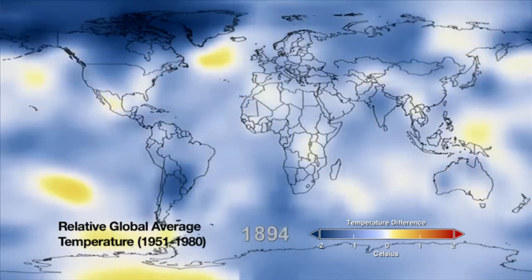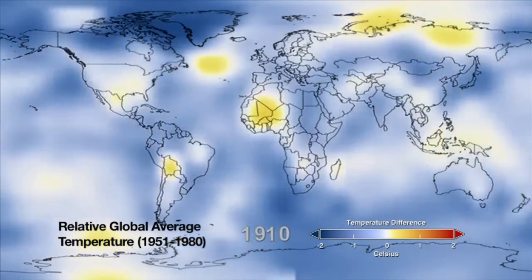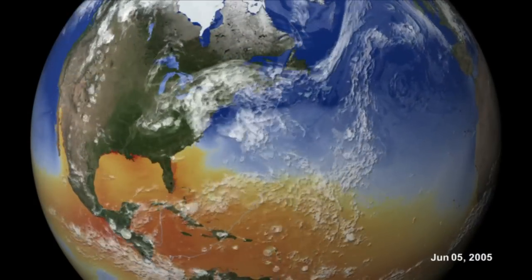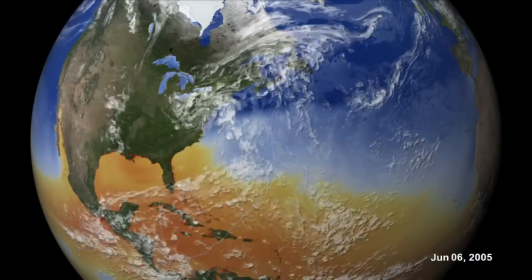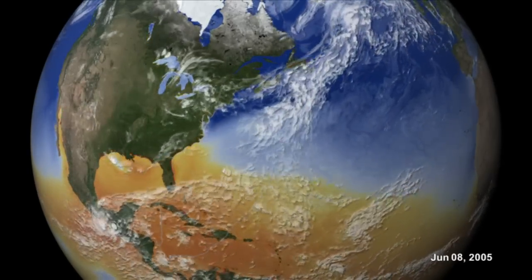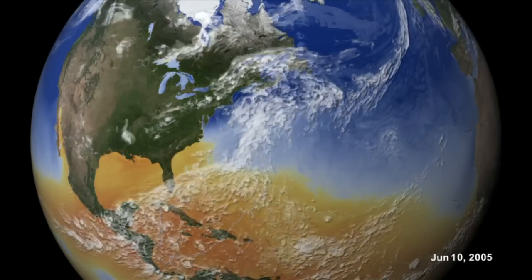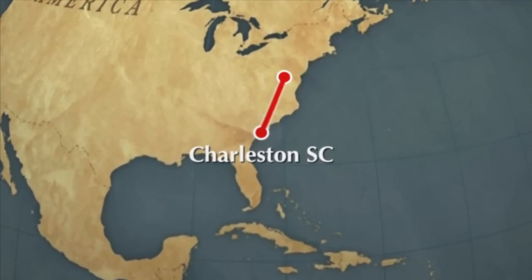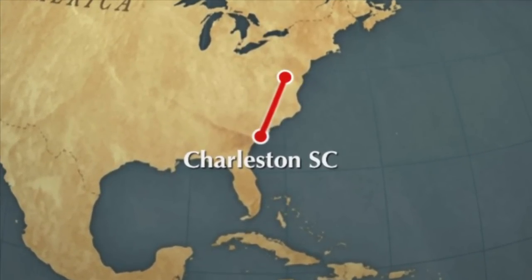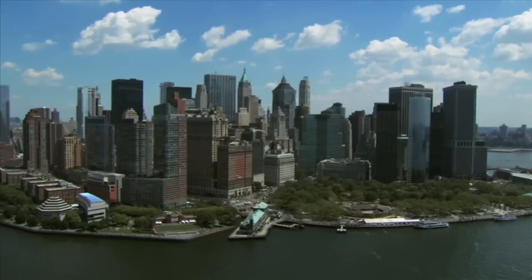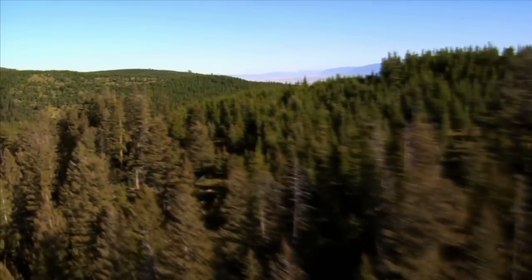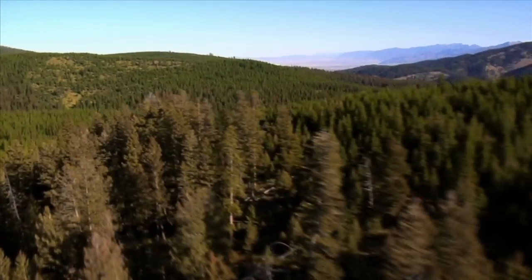A temperature change of 1.4 degrees Fahrenheit may not seem like much if you're thinking about a daily or seasonal fluctuation. However, it is a significant change when you think about a permanent increase averaged across the entire planet. For example, 1.4 degrees is more than the average annual temperature difference between Washington, D.C. and Charleston, South Carolina, which is more than 450 miles south of Washington. On any given day, a difference of 9 degrees Fahrenheit might be the difference between wearing a sweater or not. But a change of 9 degrees in the global average temperature is the estimated difference between the climate of today and an ice age.